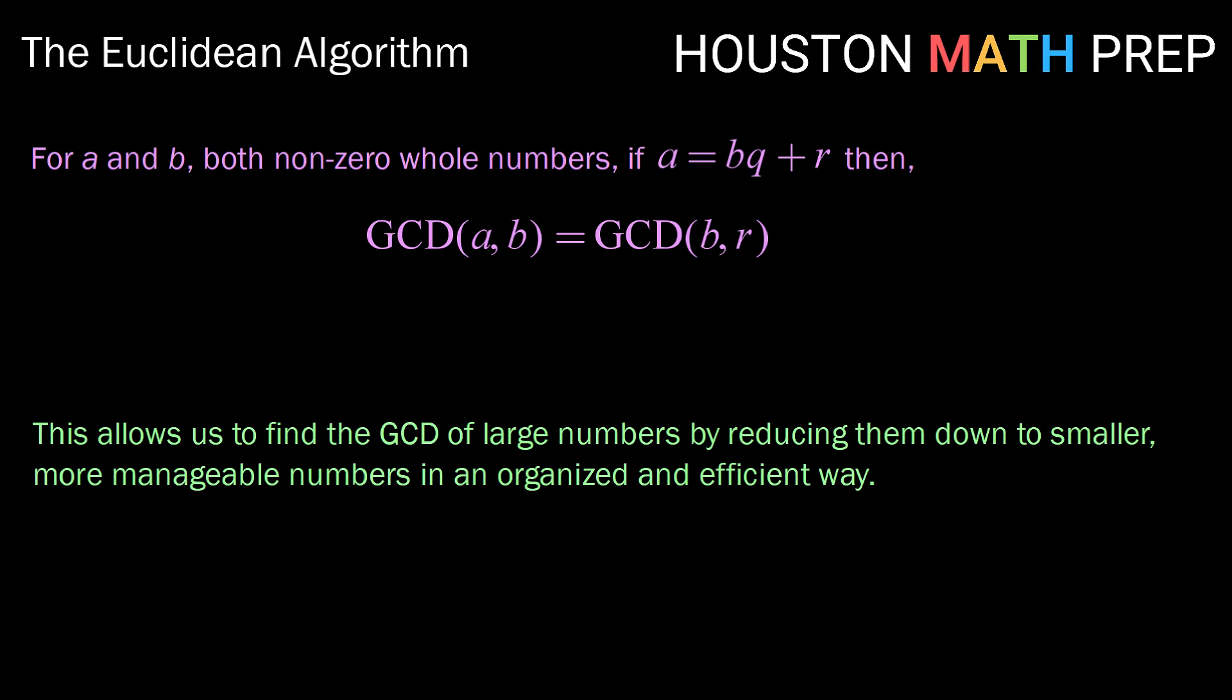This allows us to find the GCD of large numbers by reducing them down to smaller, more manageable numbers in an organized and efficient way. Now this is probably most easily understood through example, so let's jump in.